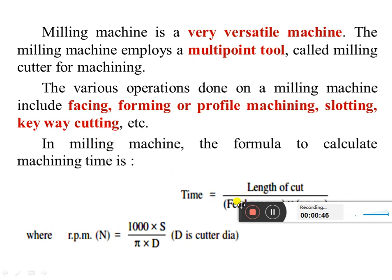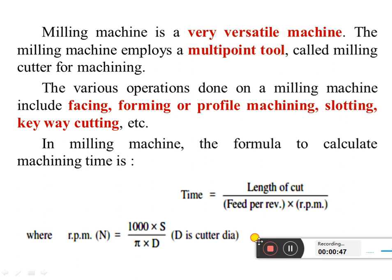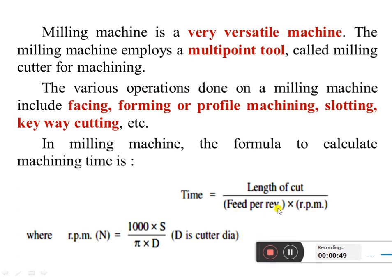The formula to calculate machining time on a milling machine is: Time = Length of Cut / (Feed per Revolution × RPM), where RPM N = 1000 × S / (π × D), and D is the cutter diameter. This is the formula to find out the machining time for a milling machine.